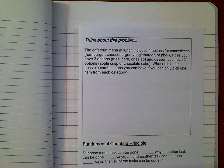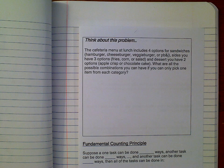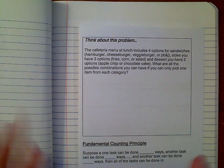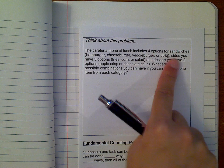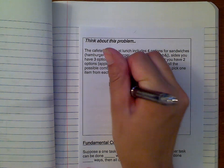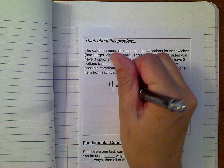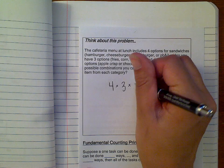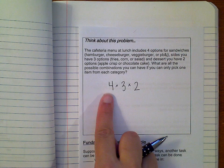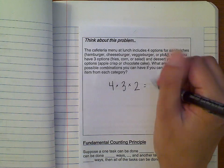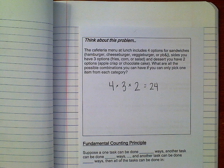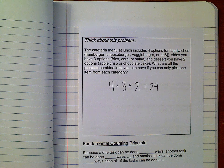Think about a way you could count all the different combinations of lunches. The easiest way to do it: since I have four options for sandwiches I take the number four, three options for sides so I take three, and two options for dessert so I take two, and I just multiply them all together. Four ways to pick the first thing, three ways to pick the second, two ways to pick the last — that gives you 24 different and unique lunches.